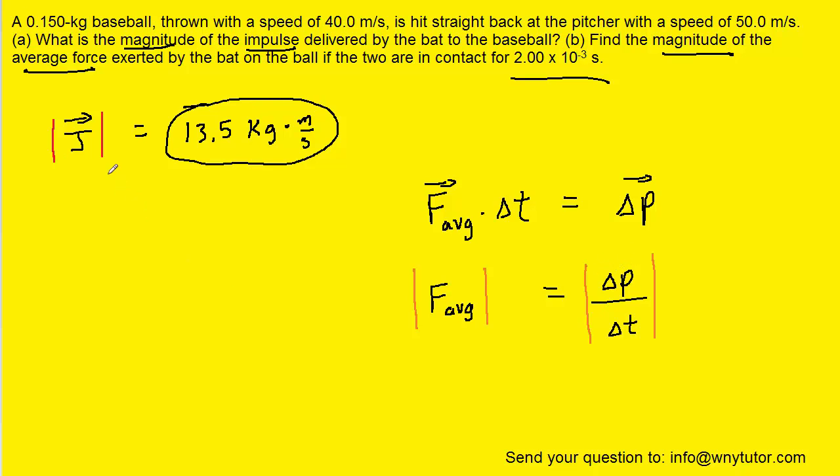Now we recall that the change in momentum is equivalent to the impulse. So all we have to do is plug in the impulse for this change in momentum and also the time interval. And when we simplify that, we should get 6750, and then the unit will be newtons since we're calculating the average force.